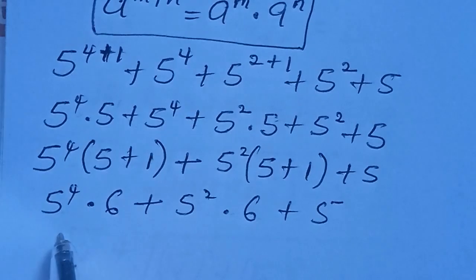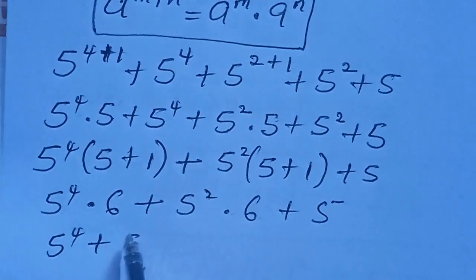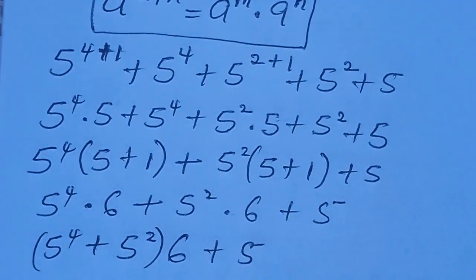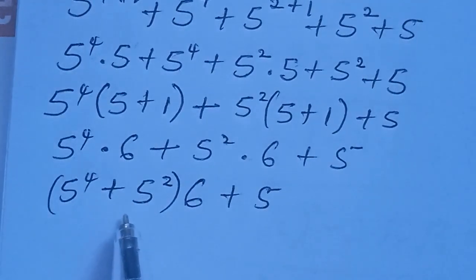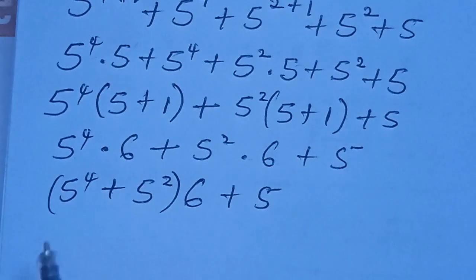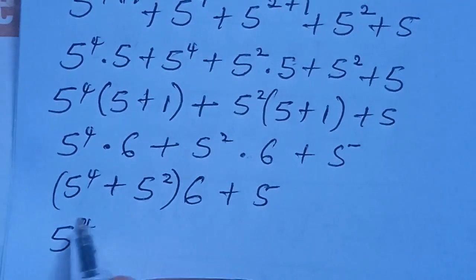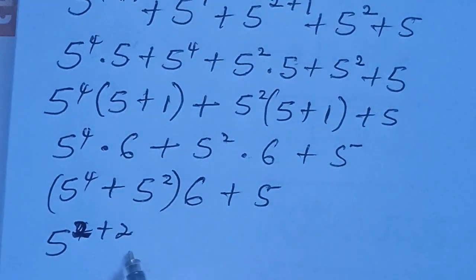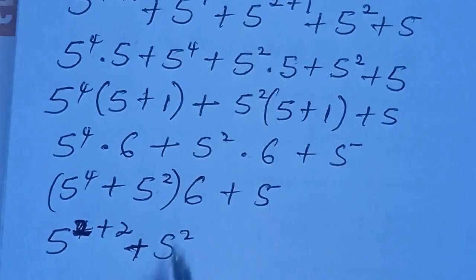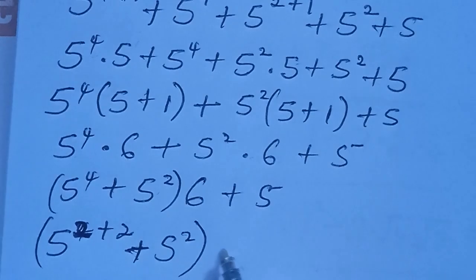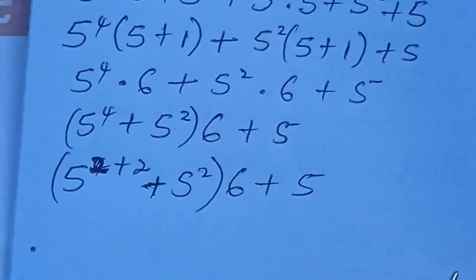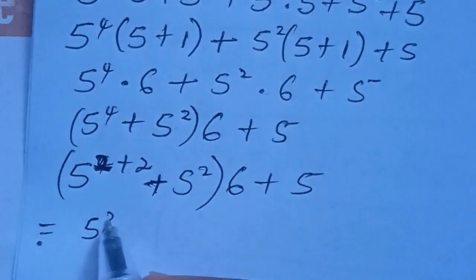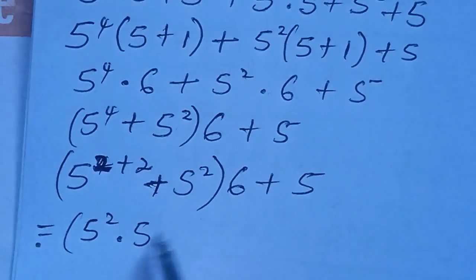From this result we can see that 6 is common, so we factor it out. We have 6 multiplied by bracket (5 to the power of 4 plus 5 to the power of 2), close bracket, plus 5. Now using our earlier identity we can break down 5 to the power of 4 as 5 to the power of 2 plus 2.